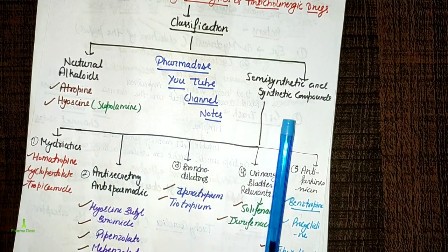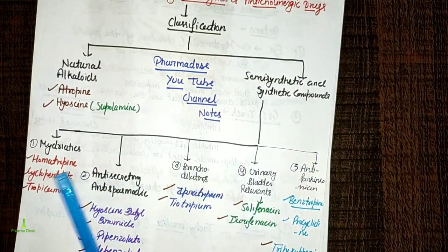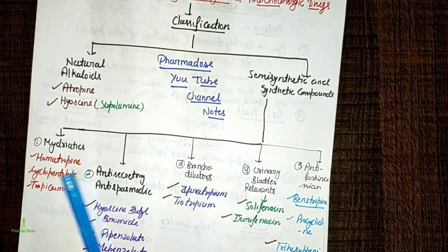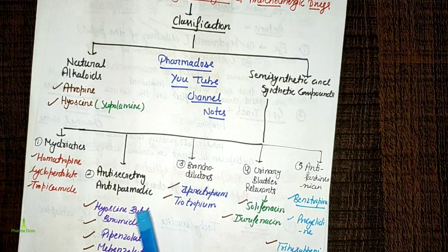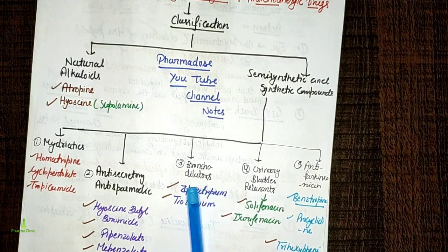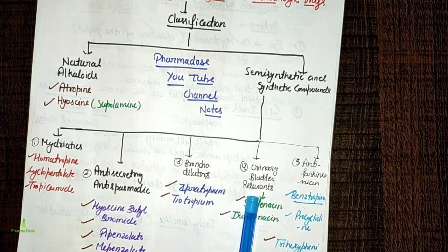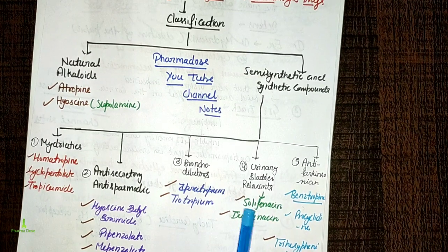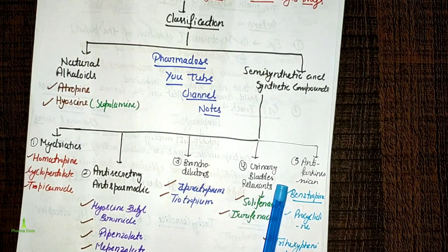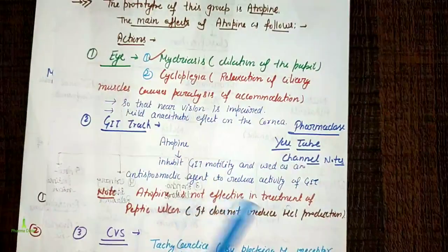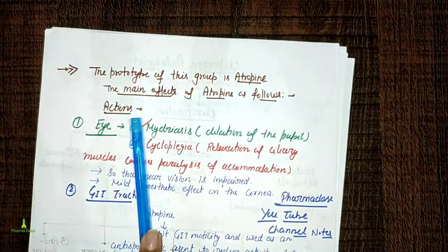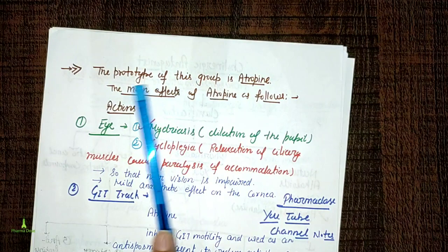So to summarize the classification: natural alkaloids — atropine and hyoscine; semi-synthetic divided into 5 categories: mydriatics (homatropine, cyclopentolate, tropicamide), anti-secretory (pipenzolate, mepenzolate, pirenzepine, hyoscine butylbromide, dicyclomine, isopropamide), bronchodilators (ipratropium, tiotropium), urinary bladder relaxants (solifenacin, darifenacin), and anti-Parkinson (benztropine, procyclidine, trihexyphenidyl). The prototype of this group is atropine.